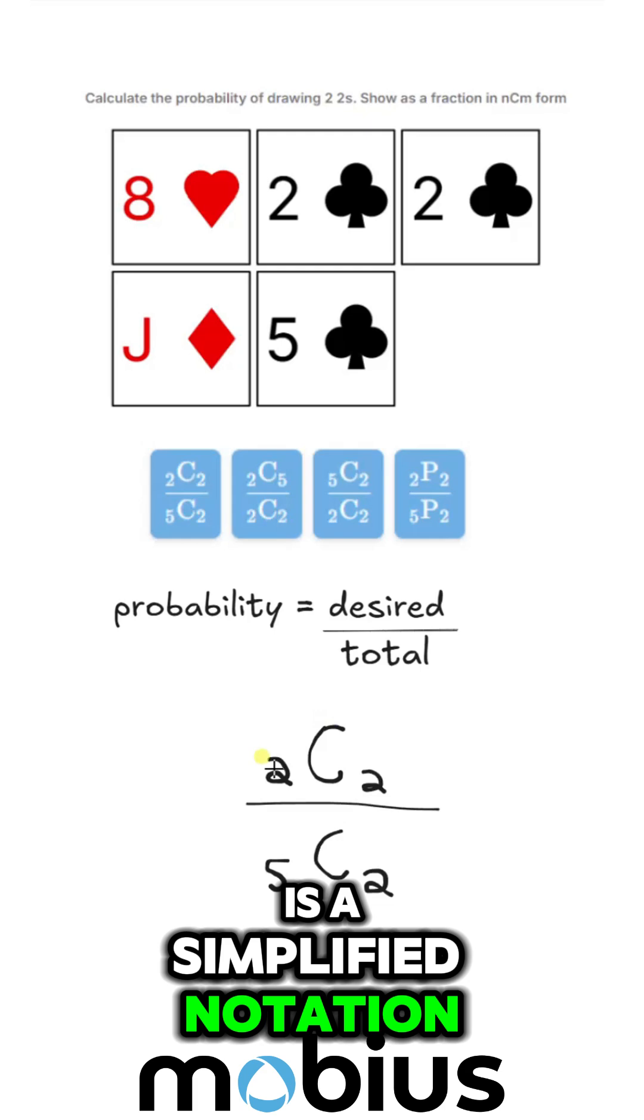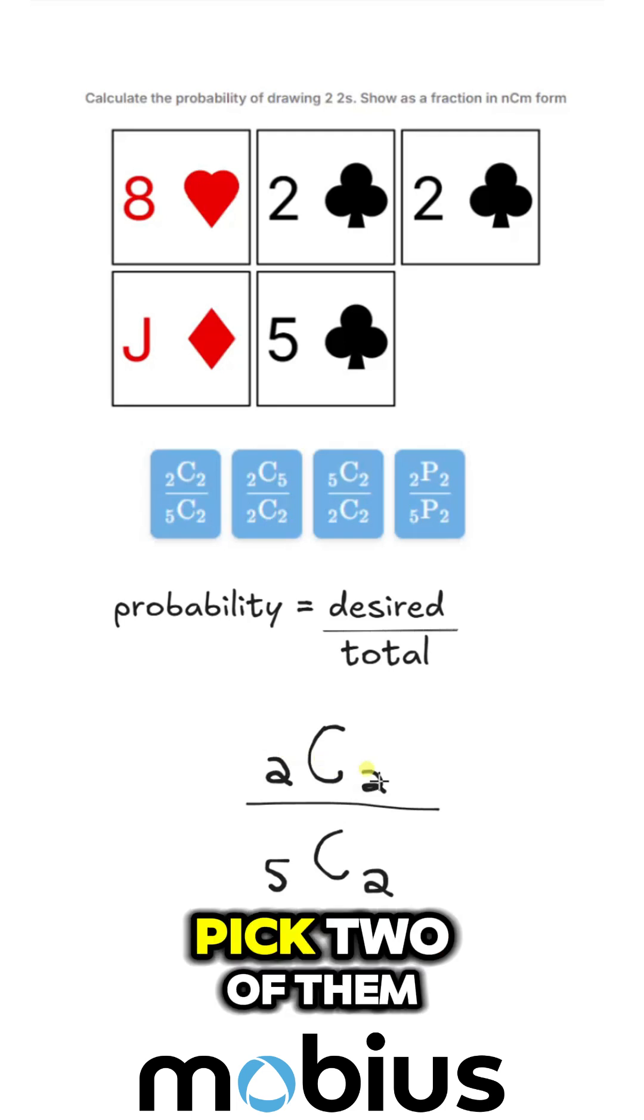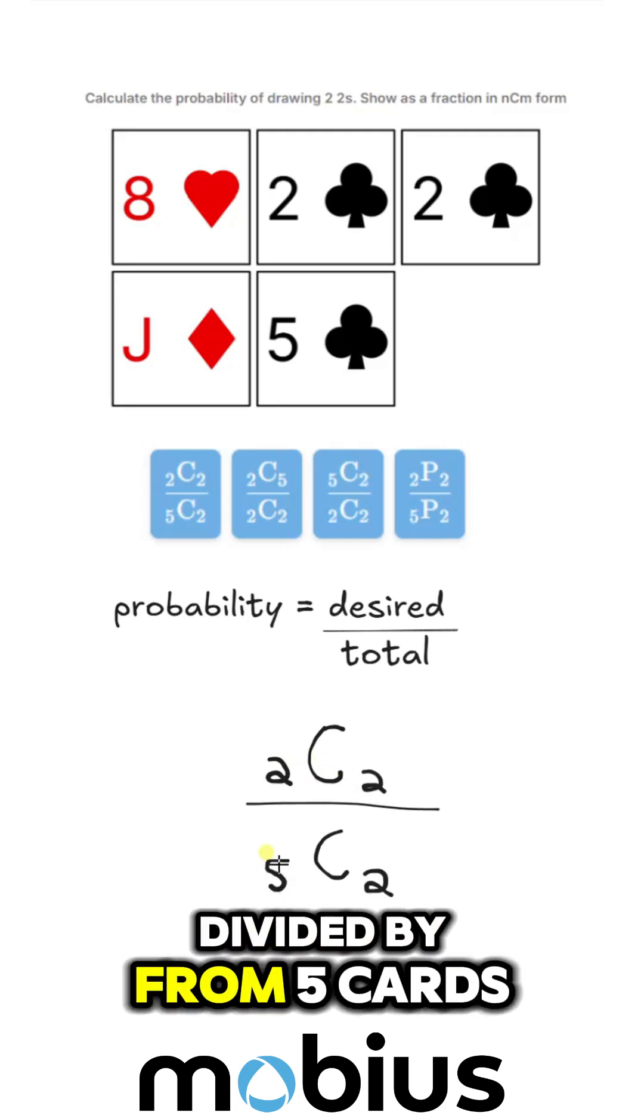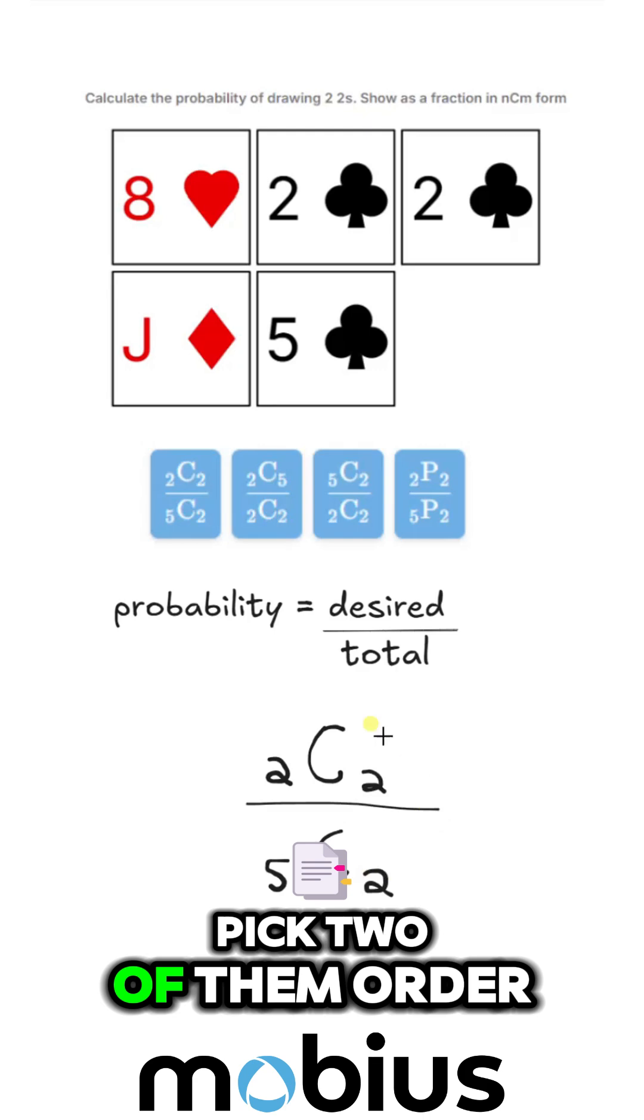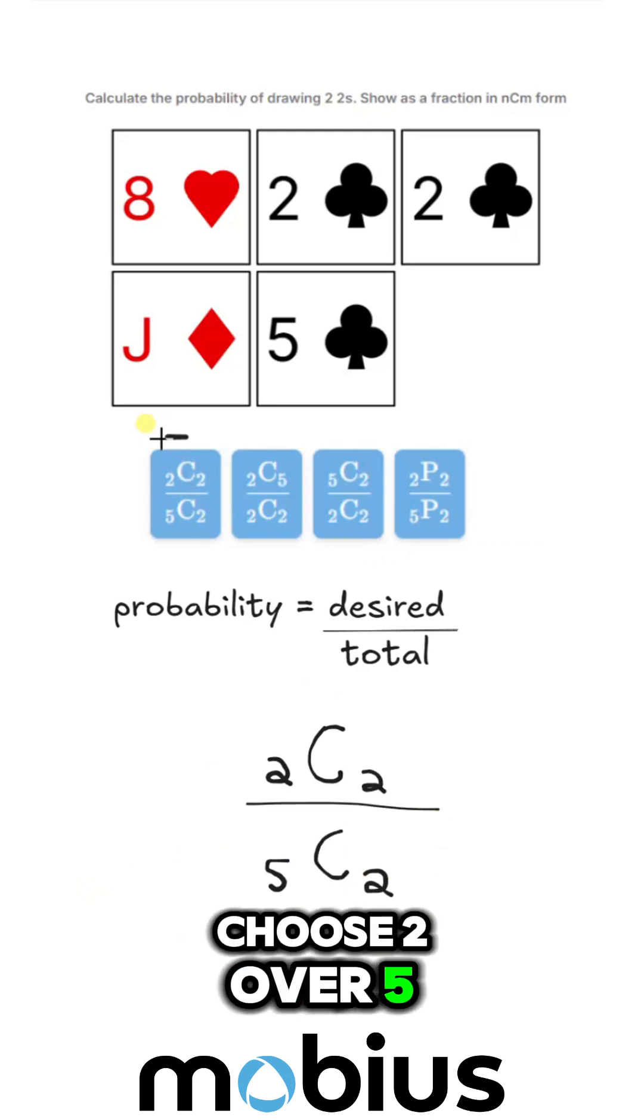And this is a simplified notation. Two choose two divided by five choose two. From two cards, pick two of them, divided by five cards, pick two of them. Order doesn't matter. So our answer, two choose two over five choose two, is right here.